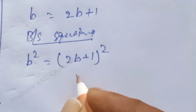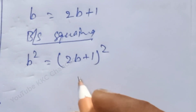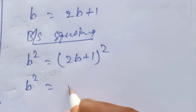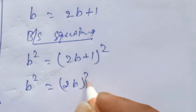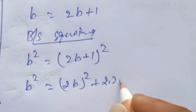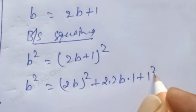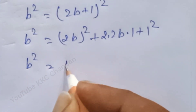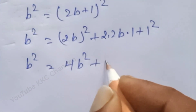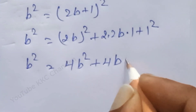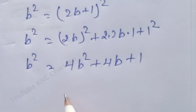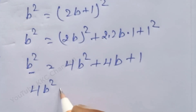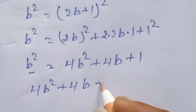Squaring both sides: b squared is equal to the bracket 2b plus 1 whole squared. Expanding using the form a squared plus 2ab plus b squared: b squared is equal to 4b squared plus 4b times 1 plus 1 squared. So b squared is equal to 4b squared plus 4b plus 1.